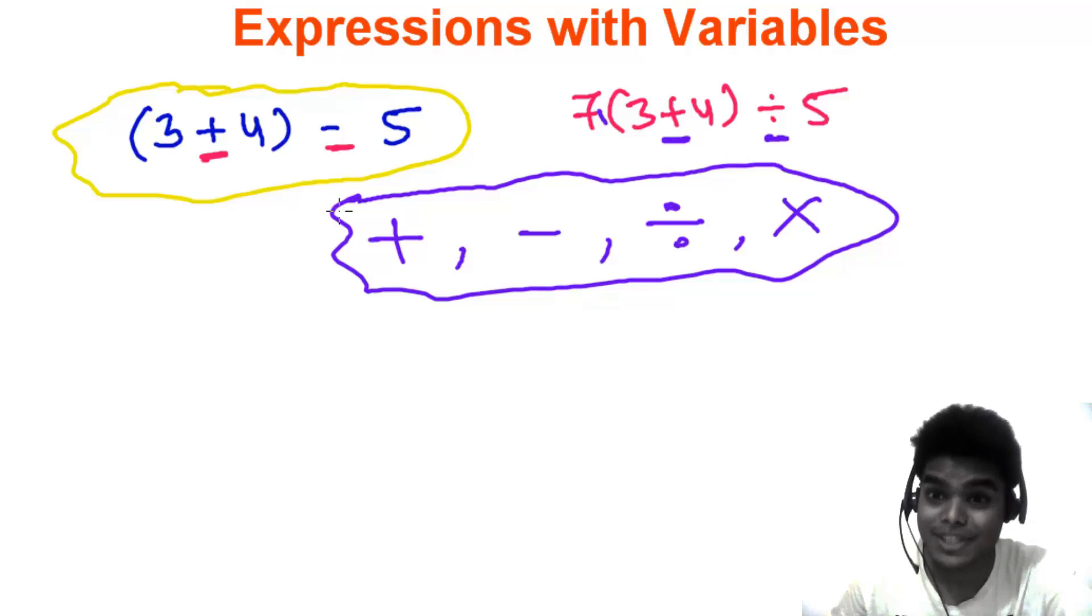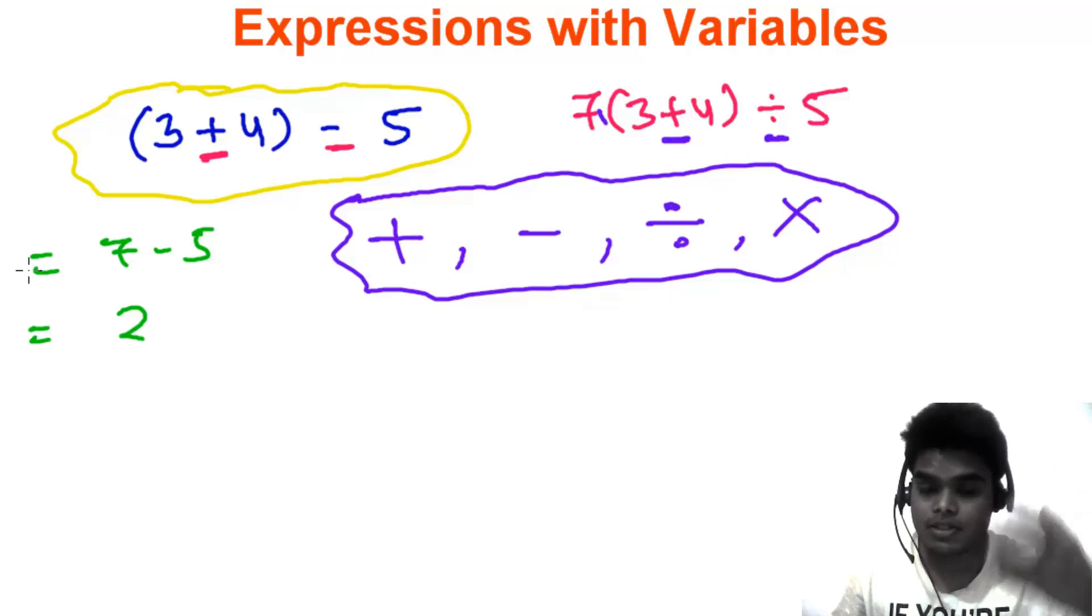These four mathematical operations we're going to use with the variables too. But in arithmetic, if you see these things, we can easily solve it. 3 plus 4 minus 5, it's like 7 minus 5, that is 2. How easy it is.